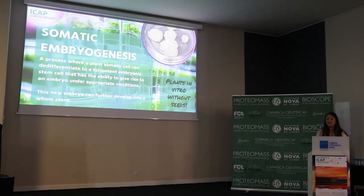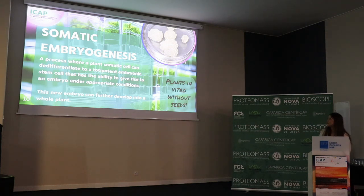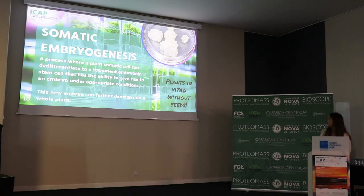Somatic embryogenesis is a process where a plant somatic cell can differentiate into a totipotent embryogenic cell that has the ability to give rise to an embryo under appropriate conditions. This new embryo can further develop into new plants — it is a process of in vitro plant production without seeds.